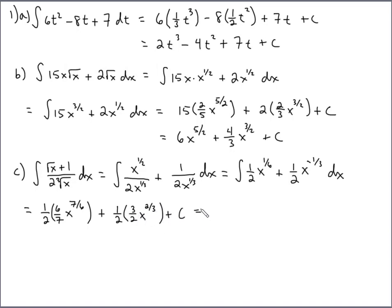And then we'll go ahead and simplify our coefficients. Six over two is three, so I'll have three-sevenths X to the seven-sixth power, plus coefficients here, two is going to multiply, give us four, so we'll have three-fourths X to the two-thirds power, plus some constant.